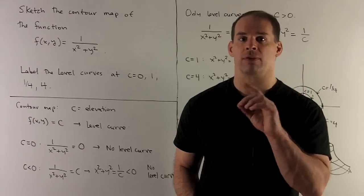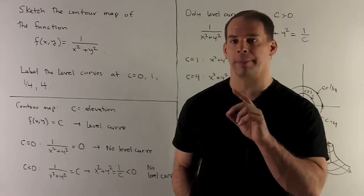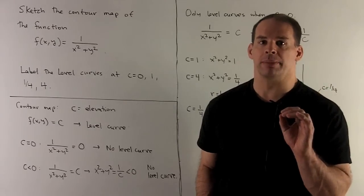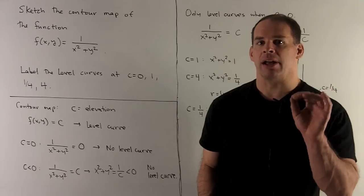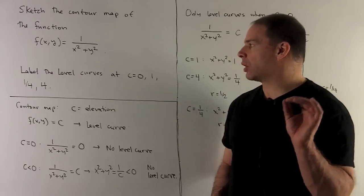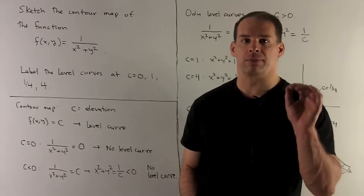That's going to give us a curve or some feature. Now let's take a look at our specific function. Let's try out some numbers. So here we're asked to find the level curves at c = 0, 1, 1/4, and 4.